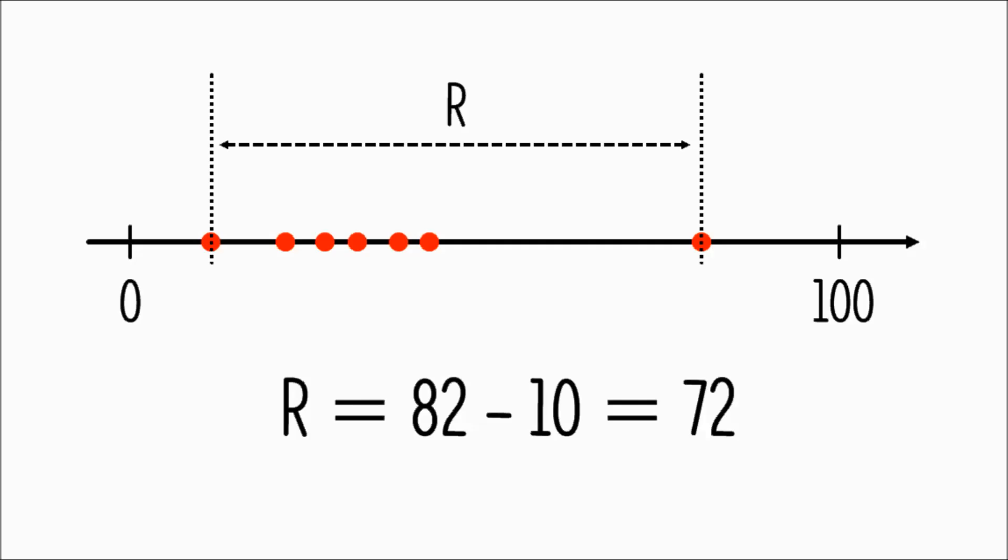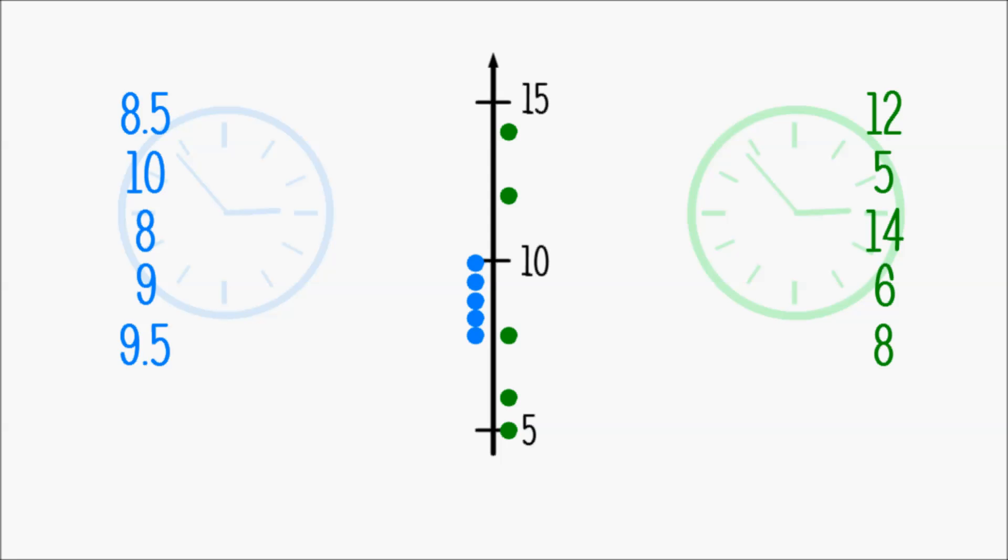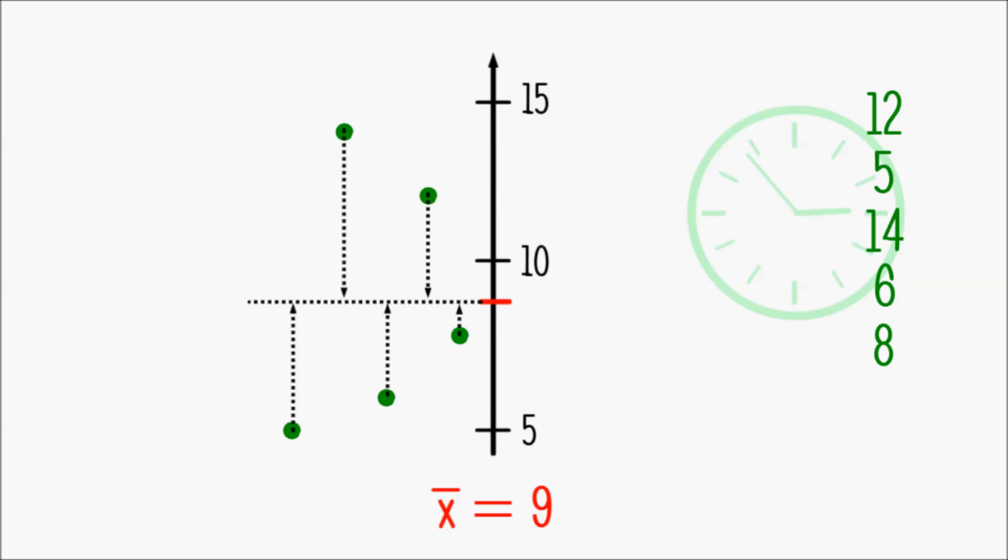So let's consider the following. Being spread out could also be seen as deviating from the average. Consequently, we could take all the differences between each individual data value,